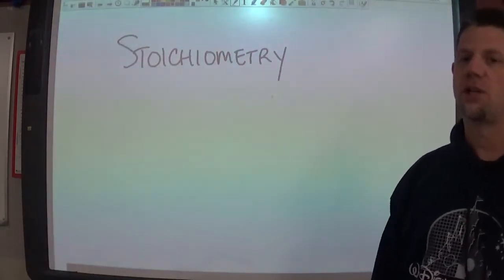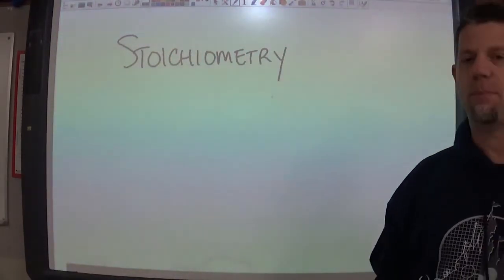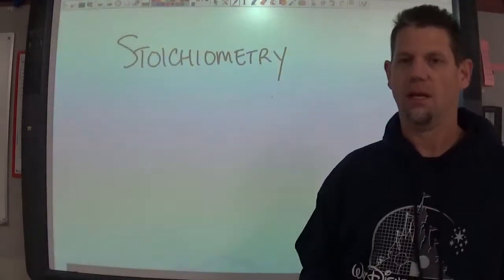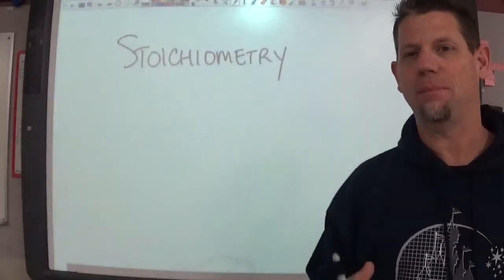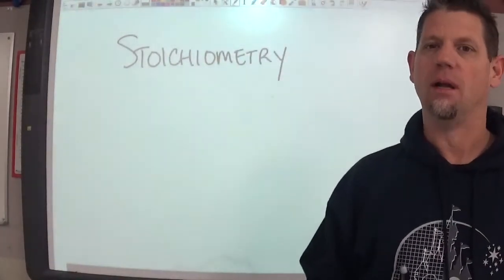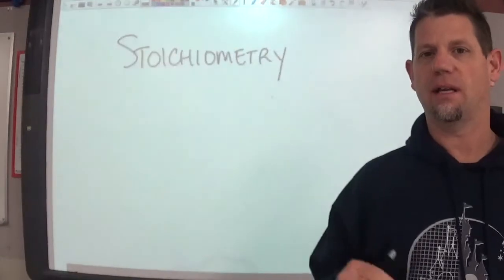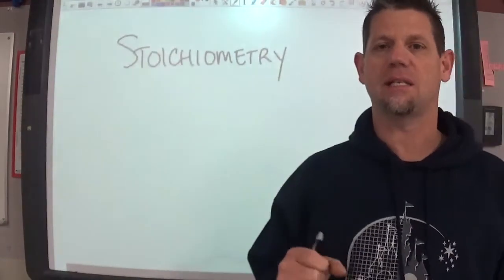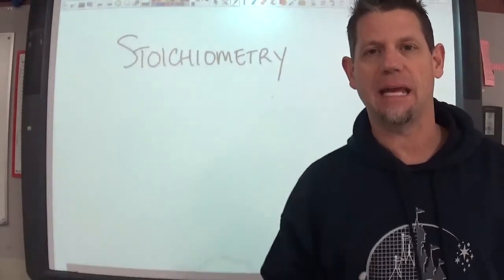Stoichiometry is the term that we use for what is happening in terms of a chemical reaction. It comes from Greek and it has to do with how many of an element there are in what's taking place.